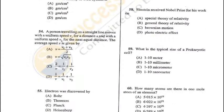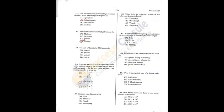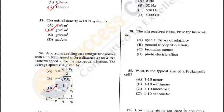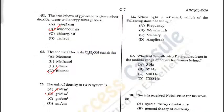Question 54: A person travels with uniform speed V1 for a distance x and uniform speed V2 for the next equal distance. The average speed V is given by 2/V = 1/V1 + 1/V2 — C is the correct answer. Question 55: Electron was discovered by J.J. Thomson in 1897 — B is the correct answer. Question 56: When light is reflected, frequency does not change — A is the correct answer.